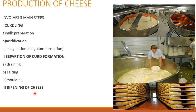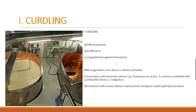Curdling contains three parts: milk preparation, acidification, and coagulum formation. The milk is pasteurized, acidified by adding certain enzymes or bacteria, and then converted into curdled form called the coagulum. Milk coagulation occurs due to two distinct activities: inoculation with bacterial cultures, and incubation with rennet, where casein protein undergoes hydrolysis.